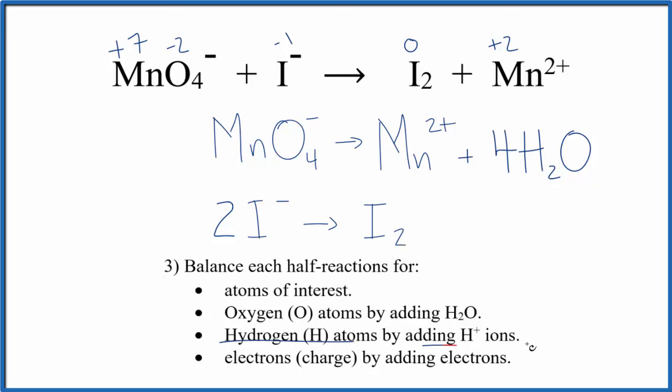For the hydrogen atoms we're going to add hydrogen ions to balance those. This takes place in acidic mediums so we have hydrogen ions available. Four times two is eight so let's add eight H plus over here. That balances the hydrogens. No hydrogens down here.